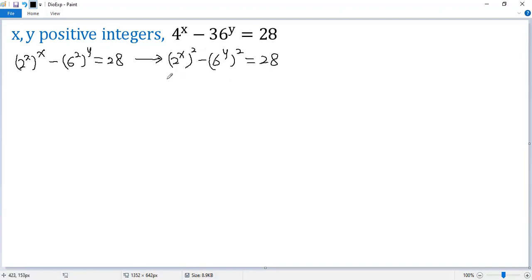Using difference of squares formula, we can factor the left side. So we get 2 to the power of x minus 6 to the power of y times 2 to the power of x plus 6 to the power of y equals 28.